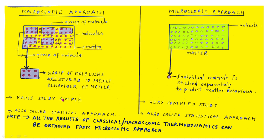An important point here is that all the results of macroscopic thermodynamics, also called classical thermodynamics, can however be derived from the microscopic approach. Every result obtained in the macroscopic approach — such as pressure, temperature, density, volume, entropy, and energy — is also obtainable through the microscopic approach. So the microscopic approach is the root cause of all the results of the macroscopic approach.